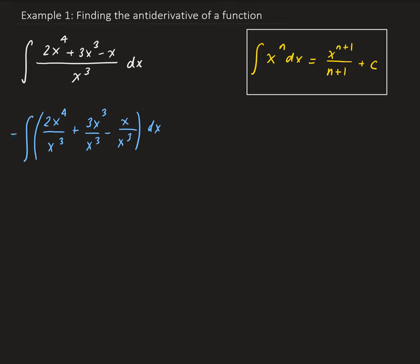From here, we can simplify each of these terms. So we have the integral of 2x plus 3 minus 1 over x squared.